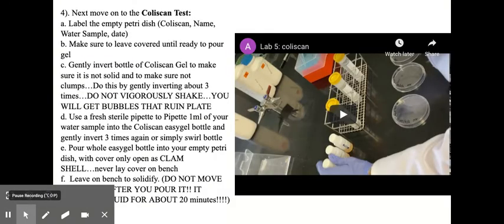And finally we move on to the coliscan test, which remember is a separate test from the other ones. It's a modern method that's completely separate. And it can also distinguish between general coliforms and E. coli, because general coliforms would appear pink and E. coli specifically would appear as blue colonies.